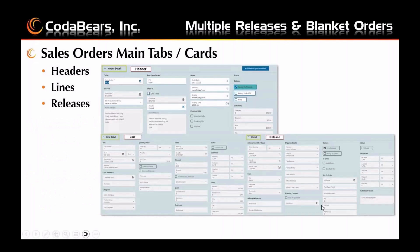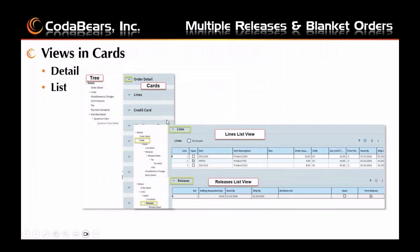These pictures show the header, line, and release in detail views in Kinetic. As you can see, the detailed views have the fields shown that were in classic Epicor, but they may be moved around in the card from where they were in tabs in previous Epicor versions. The picture on the left shows the overall view of the sales order with the collapsible and expandable tree area and the collapsible and expandable cards.